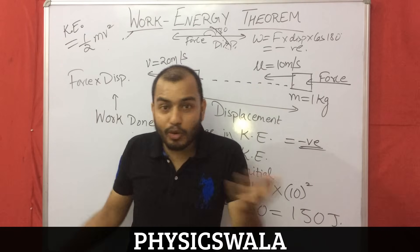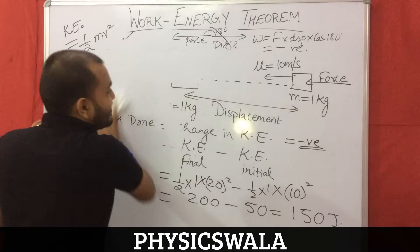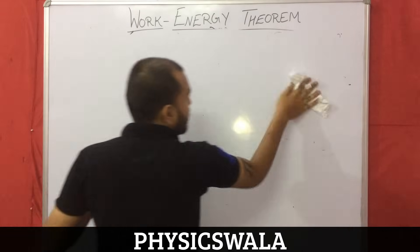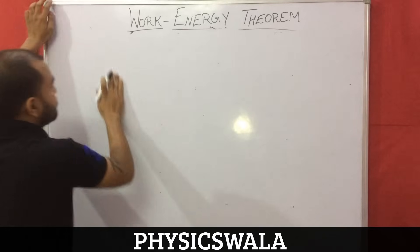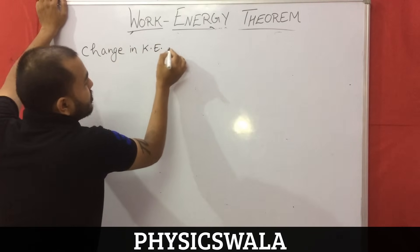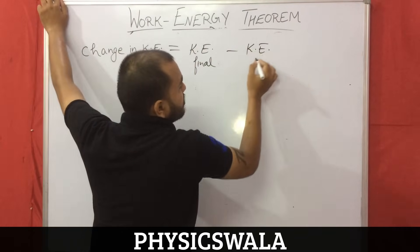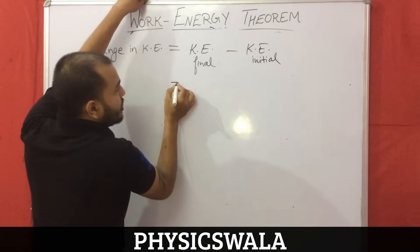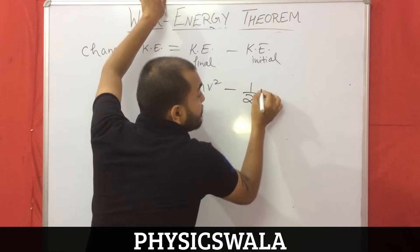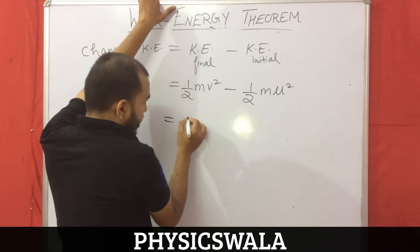Now you will say, where is the proof? Why should we believe it? I will give you the proof too. Let us go from the right-hand side. Change in kinetic energy equals kinetic energy final minus kinetic energy initial, which is half mv squared minus half mu squared, where v is the final velocity and u is the initial velocity. Taking m common, this becomes m times (v squared minus u squared) divided by 2.